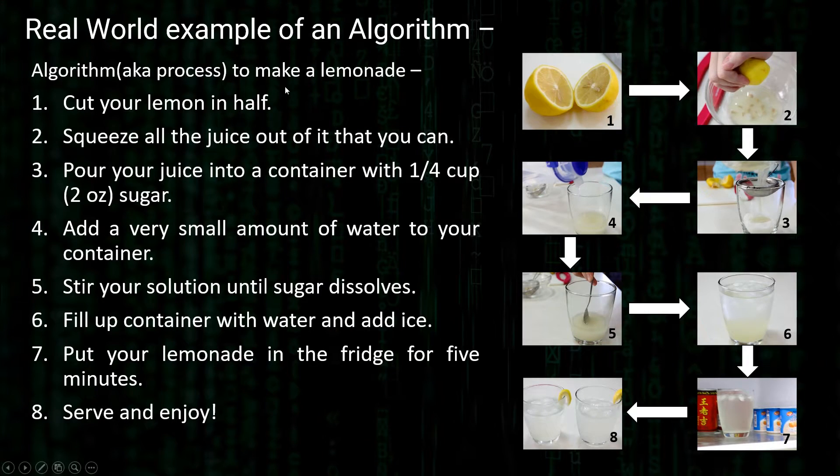Here is a real world example and the question here is process to make lemonade. I'm calling it an algorithm also because a process can be related to another term, but in programming we use the word algorithm more compared to the word process, but they are pretty much similar to each other. So what is the process?